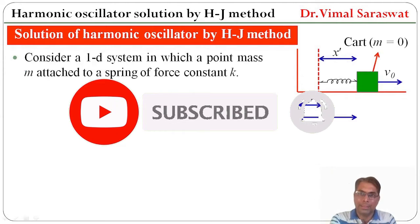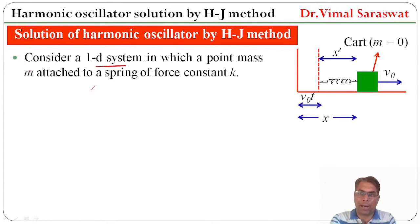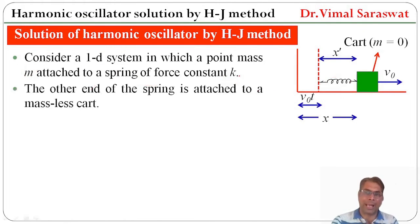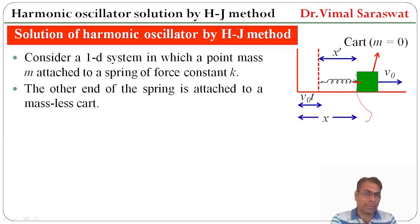Consider a one-dimensional system in which a point mass m is attached to a spring of force constant k. We have a point mass which is attached with a spring, and this spring has force constant k. The other end of this spring is attached to a massless cart, meaning this cart does not have any mass, so its mass equals zero.